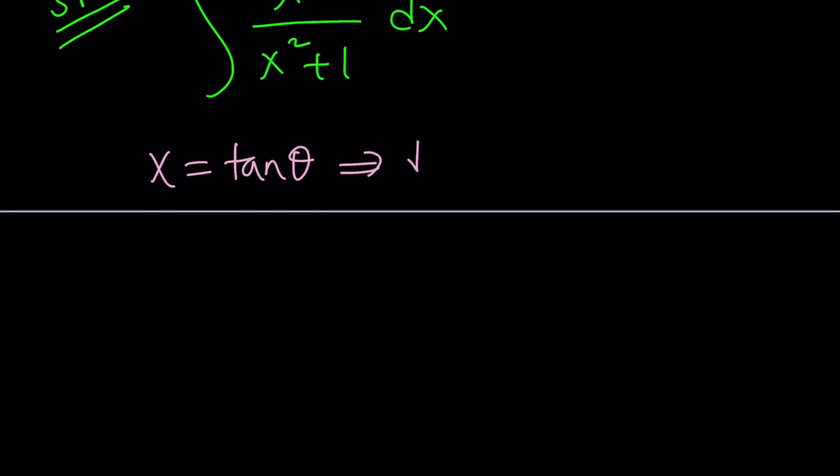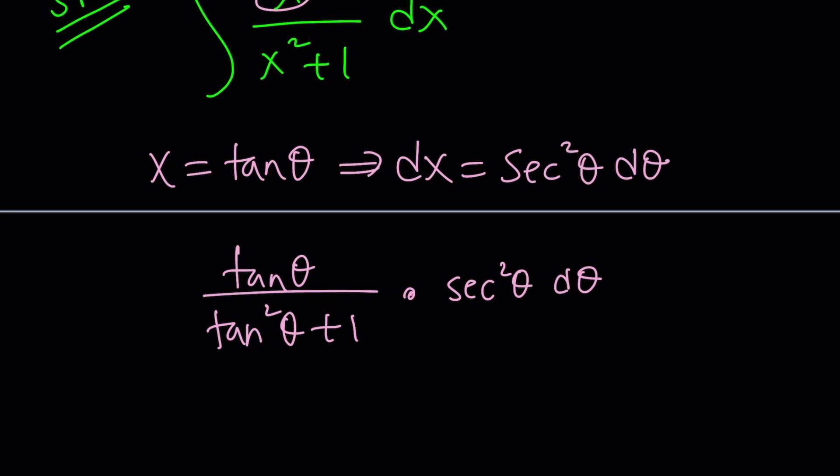And dx is going to be the integral, I mean, the derivative. What am I talking about? The derivative of tangent, which is secant squared theta d theta. And of course, you're going to replace x with tangent. And then at the bottom, you're going to get tangent squared plus 1 times dx, which is secant squared theta d theta.